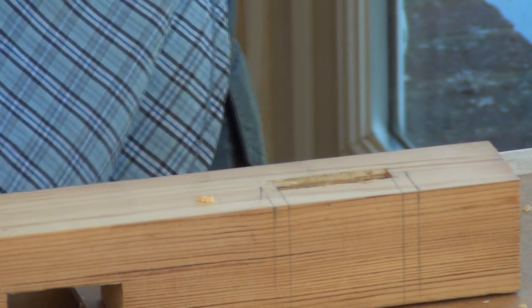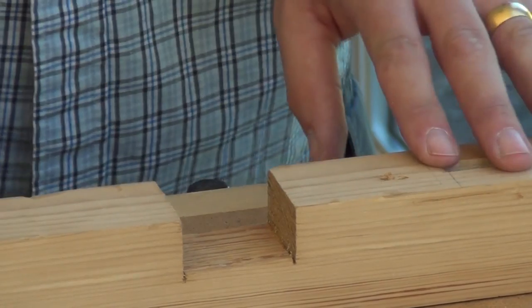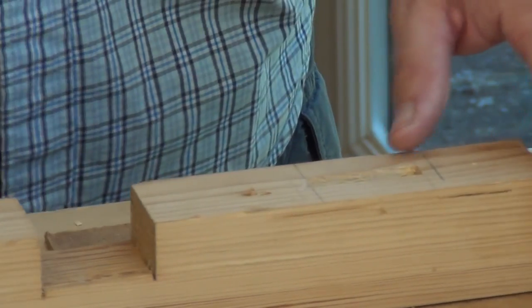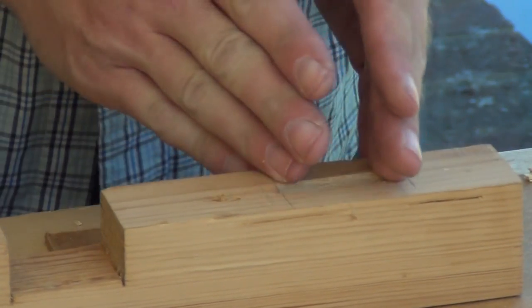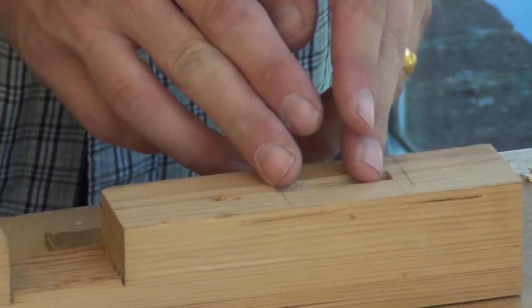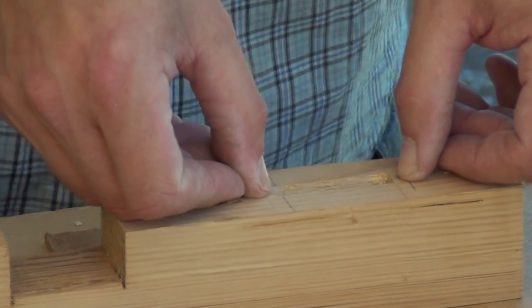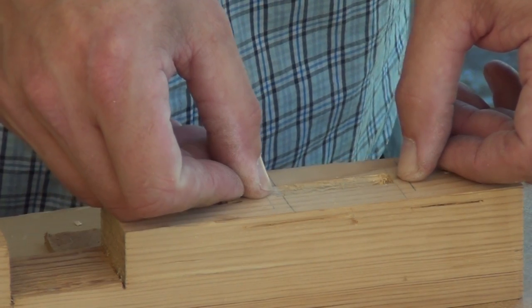Now if we flip over to the reverse side I think we know that when we put wedges in we're going to drive out the tenon. So that's going to need somewhere to go. So we make the mortise a little bit wider on the back side.